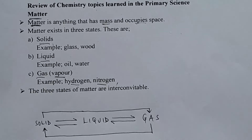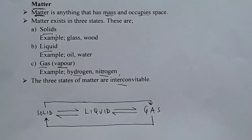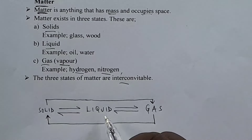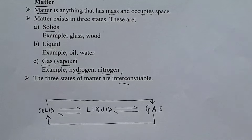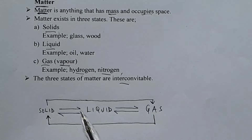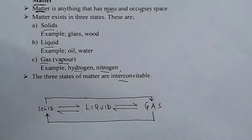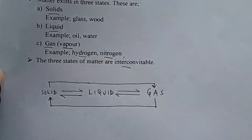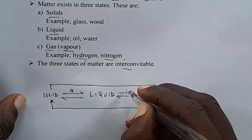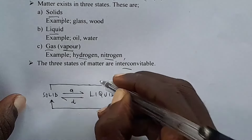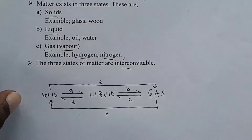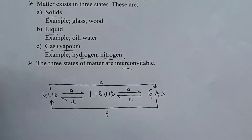The three states of matter are interconvertible. That means if we have one state of matter, we can convert it to another state of matter by applying a condition. During the exam, if you are given a diagram with letters like process A, B, C, D, E, and F, you can be asked only two things: the teacher can ask you to name the process, or the teacher can ask you to state the conditions.